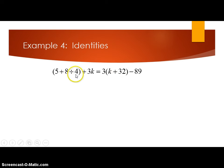I'm going to divide, 8 divided by 4 is 2, and I'm going to do the distributive property to get rid of parentheses on the right side. So 3 times k is 3k, 3 times 32 is 96, and bring down the minus 89. I'm going to simplify this to get rid of parentheses, and 5 plus 2 is 7, and so I'm left with 3k plus 7 equals 3k, and 96 minus 89 is also 7.